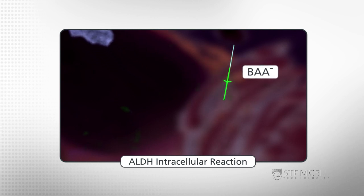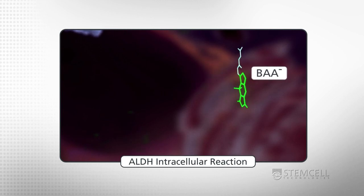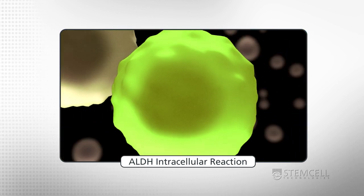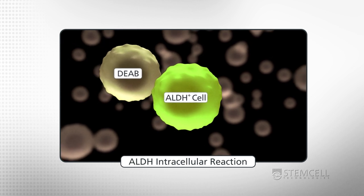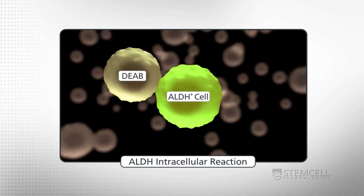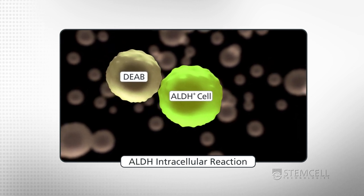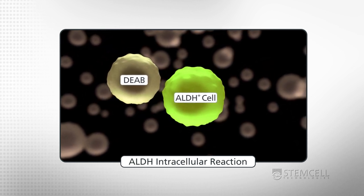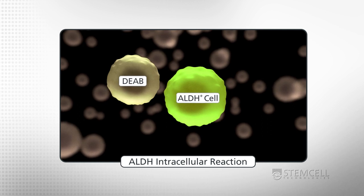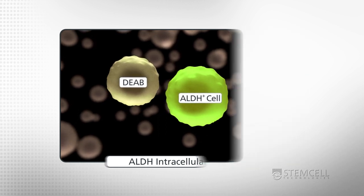Cells treated with diethylaminobenzaldehyde, or DEAB, which is an ALDH inhibitor, are used as the negative control. ALDH-bright cells are then detected by flow cytometry.